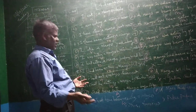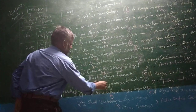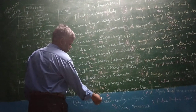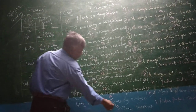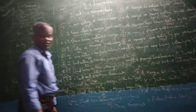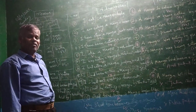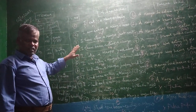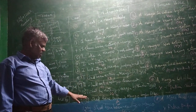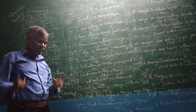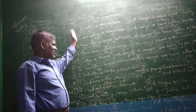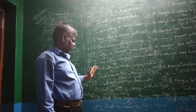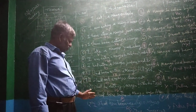So the tenses that have no passive form are: present perfect continuous, past perfect continuous, future continuous, and future perfect continuous. The tenses we have passive forms for are: simple present, present continuous, present perfect, simple past, past continuous, past perfect, simple future, and future perfect — only 8 passive forms out of 12 active forms.